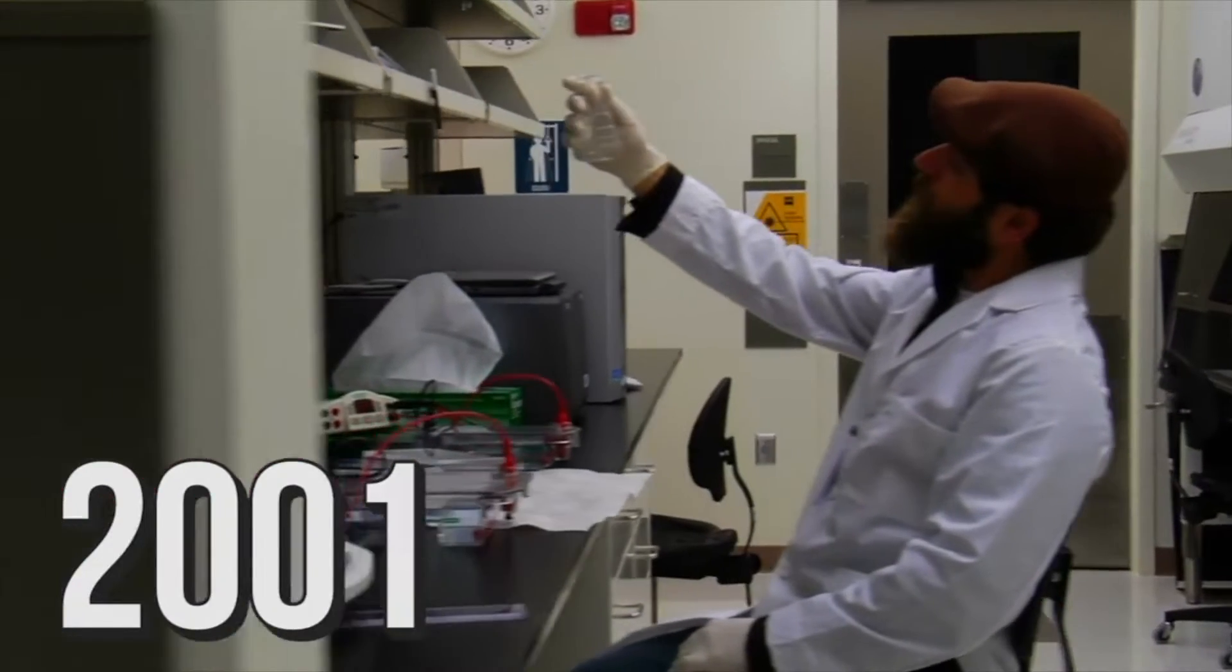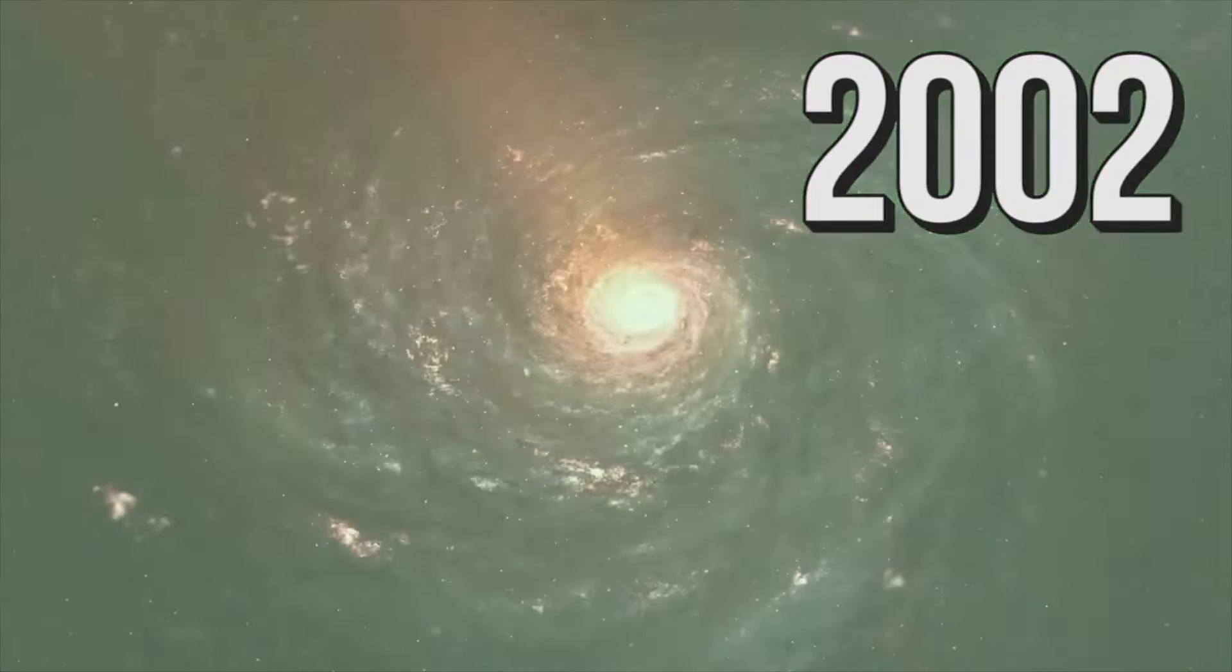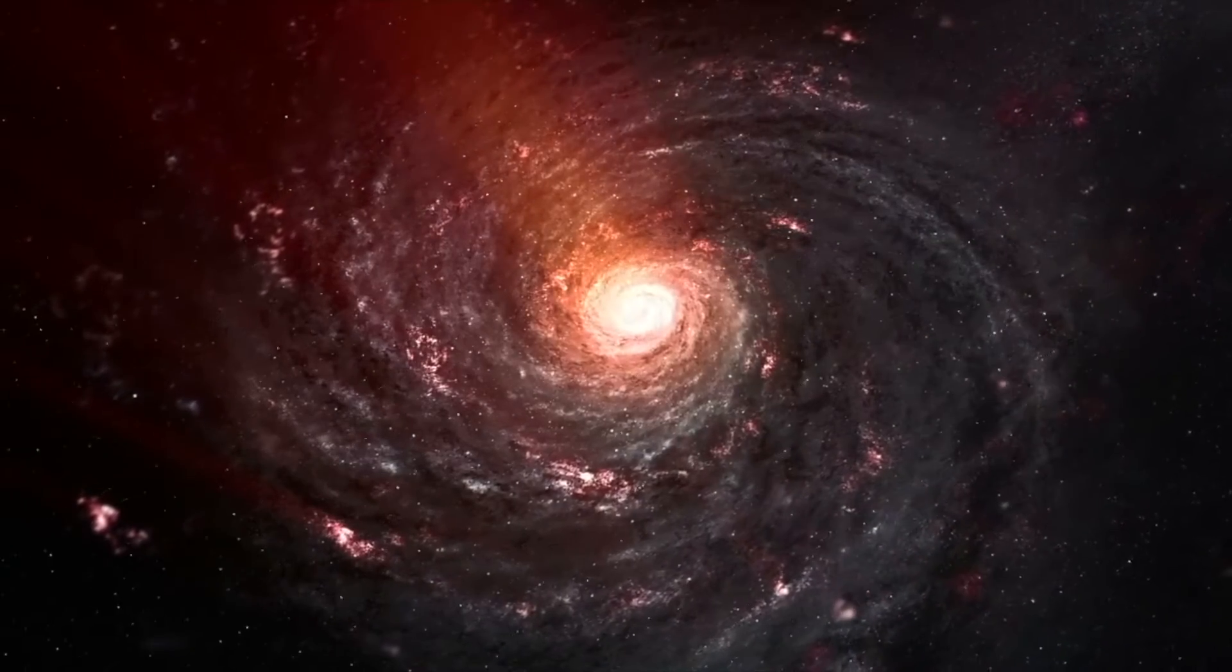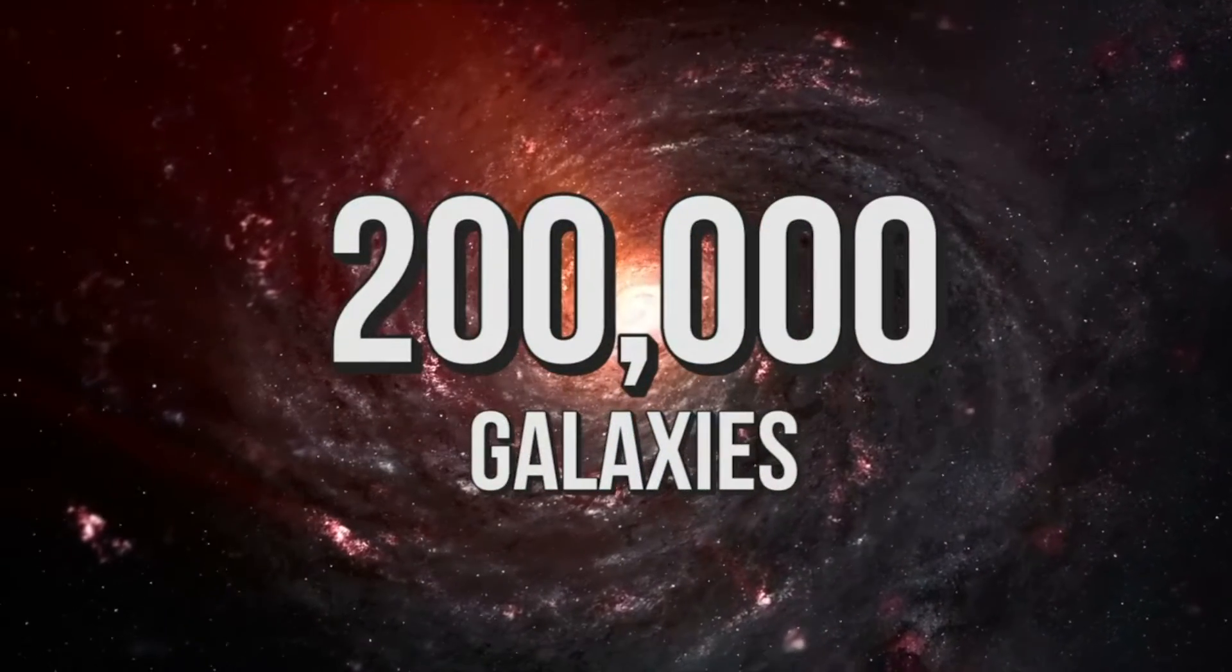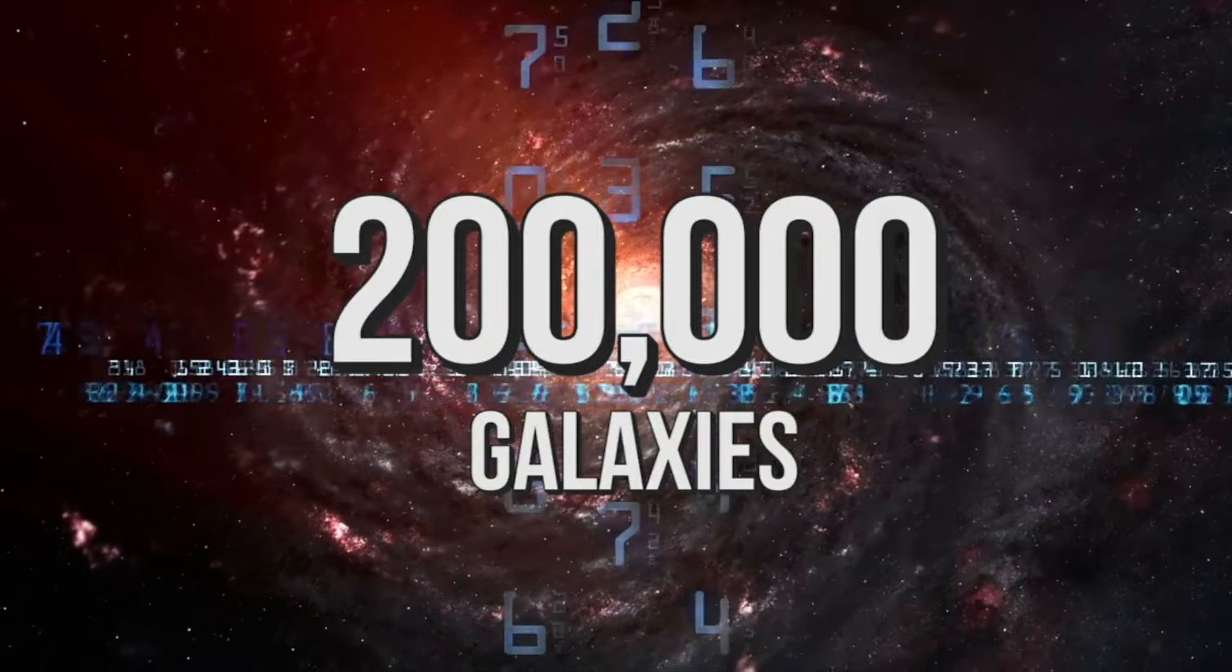Initially, in 2001, the researchers thought that the universe was a slightly less attractive greenish-white. But in 2002, they issued a correction claiming that the light from 200,000 studied galaxies averaged together comes out to a beige-ish-white.